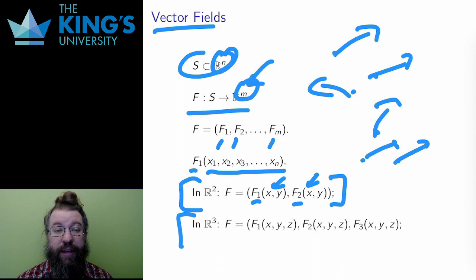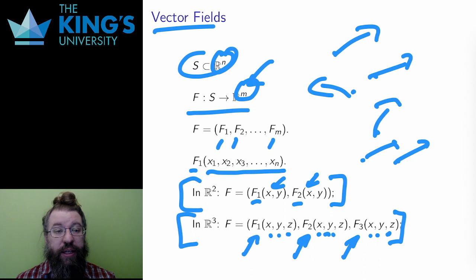Similarly, here is the general form of a vector field in R^3. It has three inputs, the position variables x, y, and z, and it has three outputs, the component functions F1, F2, and F3, each of which is a scalar field on R^3. It attaches a three-dimensional arrow with direction and magnitude to every point of R^3.